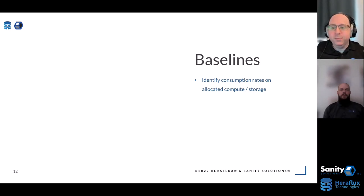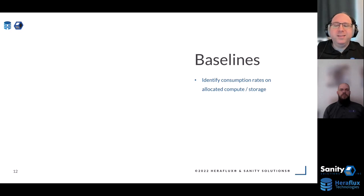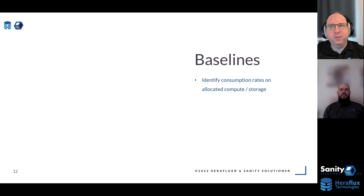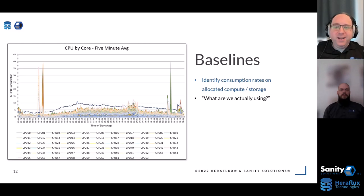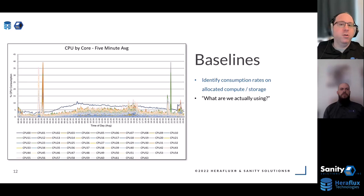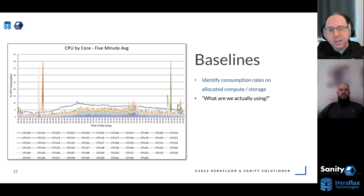Step number one: do you have a baseline? If everybody is saying it's slow, how do you know what a normal Thursday afternoon is actually doing? Most of the time we don't have this. We use a baseline to identify the consumption rates on all the stuff assigned to it — it's like a speedometer in a car. It's an indication of what you're asking this thing to do and how it's delivering that. What are we actually using in your environment?